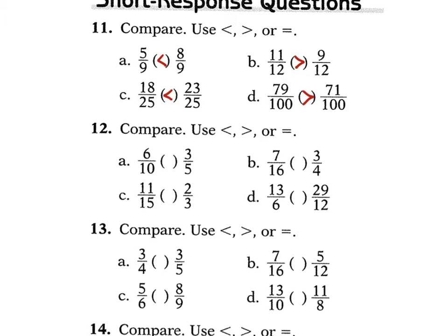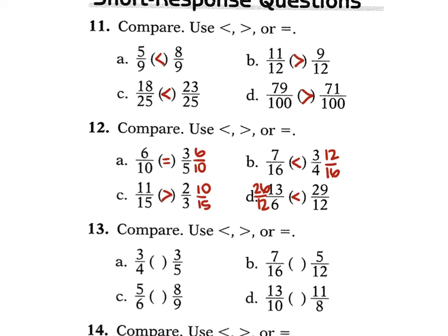For problem 12, comparing fractions with unlike denominators. For A, 6 over 10 vs. 3 over 5: 3 over 5 converts to 6 over 10 — they are equal. For B, 7 over 16 vs. 3 fourths: 3 fourths becomes 12 over 16, so 3 fourths is larger. For C, 11 over 15 vs. 2 thirds: 2 thirds becomes 10 over 15, so 11 over 15 is greater. For D, 13 over 6 vs. 29 over 12: multiply 13 over 6 by 2 to get 26 over 12 — 29 over 12 is greater.